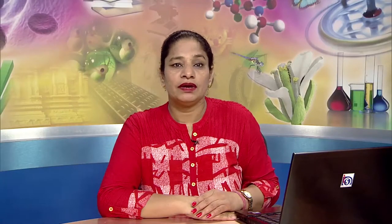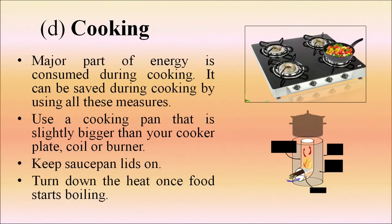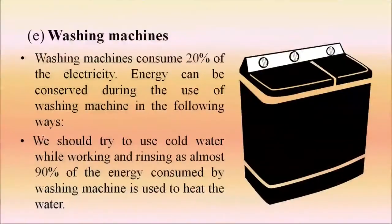Next is ironing. Every day we iron our clothes, which consumes approximately 1,000 watts — a huge amount. We can save energy by ironing clothes in bulk rather than one or two at a time. Ensure the thermostat on the iron is working and set the right temperature for the clothing being ironed. Major energy is also consumed during cooking. Use a cooking pan slightly bigger than your cooker plate or burner, keep saucepan lids on, and turn down the heat once food starts boiling.